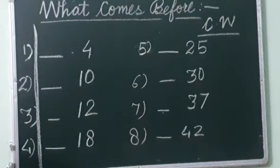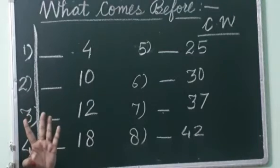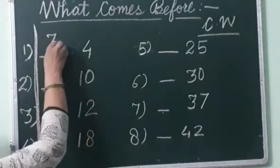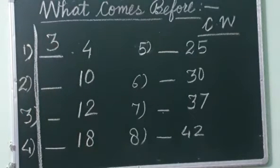Start your counting till 4: 1, 2, 3, 4. So what did you say before 4? 3. So you have to write here 3. Is it clear children?